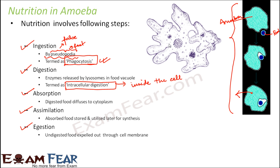So in amoeba the steps remain the same, but since the structural organization of the animal is quite different from that of human beings — human beings are a lot more complex — the way each of these steps happens is a little different. When we talk about human beings, the same steps will happen as part of holozoic nutrition, but the way each step happens will be different because the structural organization inside the human body is very different from that of amoeba.